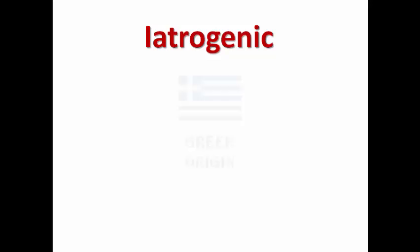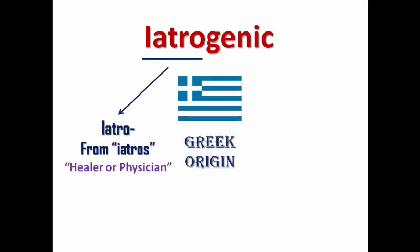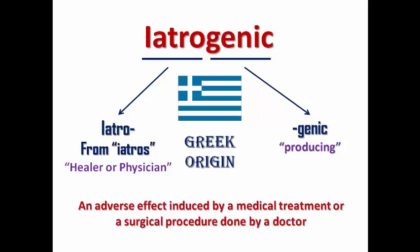Iatrogenic is an adjective used to describe diseases caused by medications or procedures done by doctors. It is of Greek origin: 'iatros' is a Greek word meaning healer or physician, and 'genic' also from Greek, meaning producing. So it means the adverse effect or disease is induced by a medical treatment or surgical procedure — iatrogenic essentially means done by a doctor.